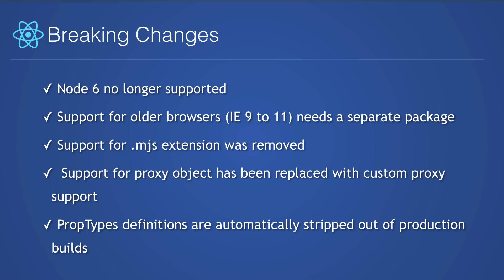Now for breaking changes — there's not too many, nothing really serious to worry about. Node 6 is no longer supported, though you should be using a much later version anyway. Support for some older browsers like IE 9 to 11 require a separate package — there's a link on the latest React blog post for more info. Support for the .mjs extension has been removed for now. The proxy object has been replaced with custom proxy support, and prop types definitions are now automatically stripped out of production builds by default. So as you can see, there's not too much to worry about for most applications as far as breaking changes go.